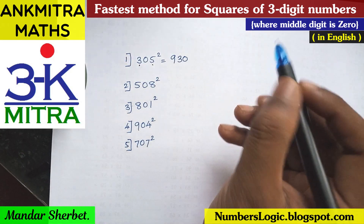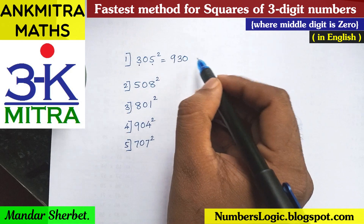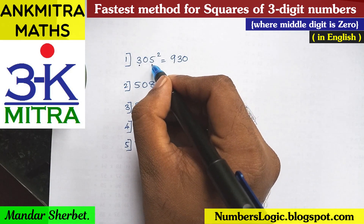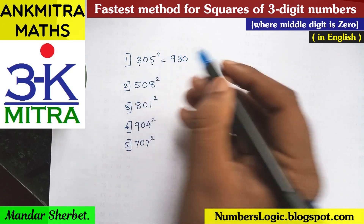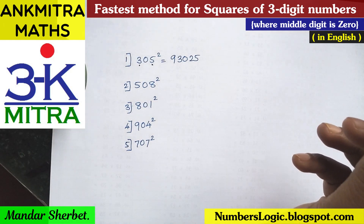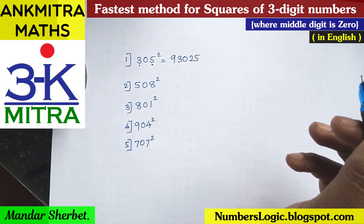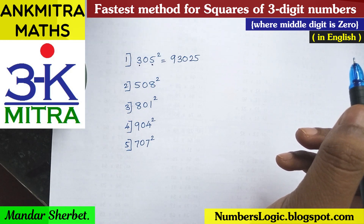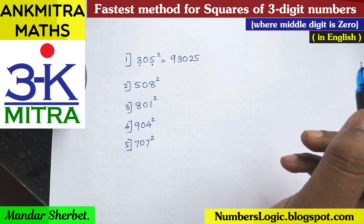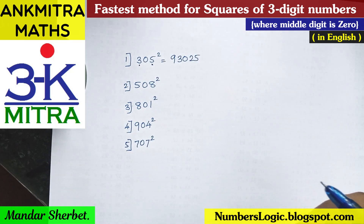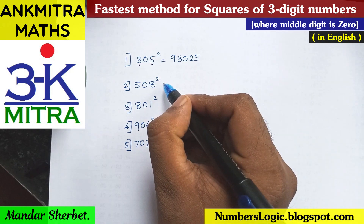The final step is to write down the square of the rightmost digit, which is 5. The square of 5 is 25. So we write down 25 and the answer is ready. You won't believe it — this is actually the correct answer, and it's very possible to solve this in a matter of 2 to 3 seconds.